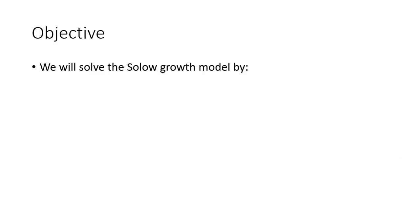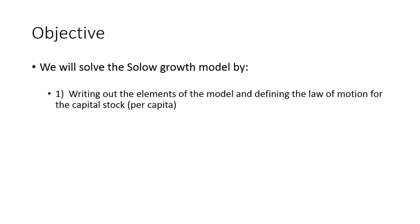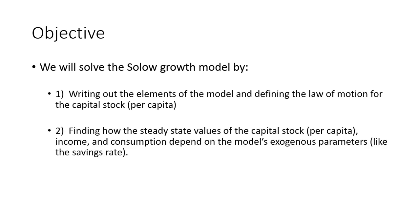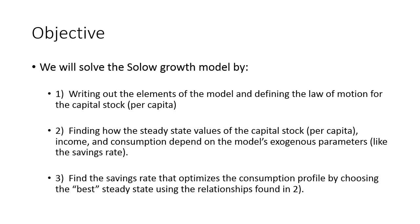The objective today is to solve the model in essentially three steps. First, by writing out all the elements of the model and defining the law of motion for capital stock per capita. Second, we'll compute the steady-state values of the capital stock, and since output and consumption depend on capital, we'll also figure out income and consumption as functions of the exogenous model parameters: the savings rate, the depreciation rate, total factor productivity, and the production parameter alpha. Third, we'll find the savings rate that actually optimizes the consumption profile — choosing the best steady-state using the relationships found in step two.